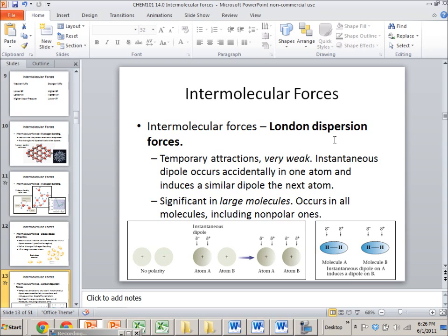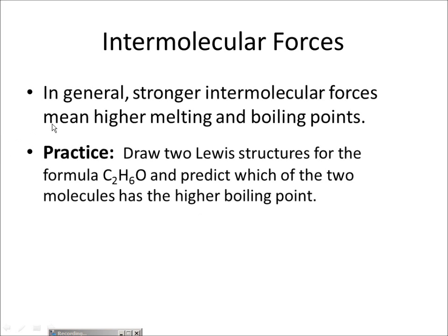London dispersion forces arise from the idea that you don't really know where electrons are at any given moment — sometimes there'll be more of them on one side of an atom or molecule than on the other. That's a temporary dipole, an artifact of quantum mechanics. If a nearby molecule has the opposite temporary dipole, they'll attract each other. In general, stronger intermolecular forces mean higher melting points and boiling points, and lower vapor pressure.